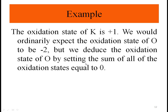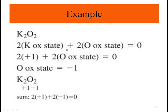So in K2O2, potassium is plus one. We would ordinarily expect oxygen to be minus two, but we deduce the oxidation state of O by setting the sum equal to zero. We have two atoms of potassium plus two atoms of oxygen equal to zero: two times plus one plus two times the oxidation state of oxygen equals zero. So the oxidation state of oxygen is minus one, and K2O2 gives two plus two times minus one equals zero.